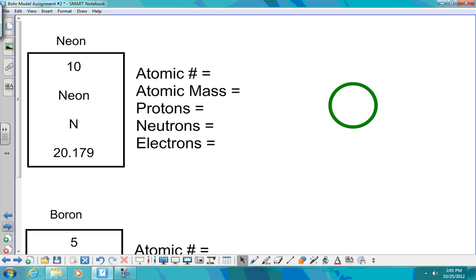Two more to do. Neon. Atomic number is 10. Get that from here. Atomic mass rounded is 20. Protons, 10. Neutrons, 10. Right? 20 minus 10. And then 10 electrons.